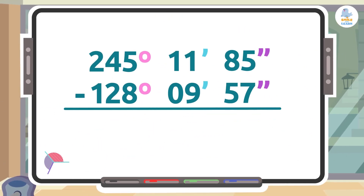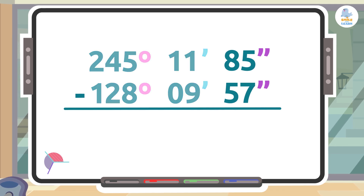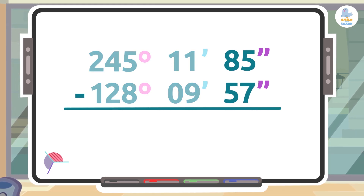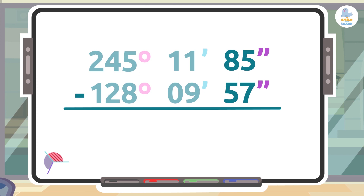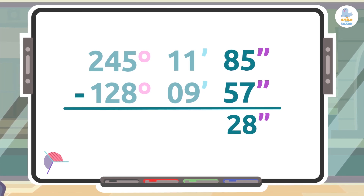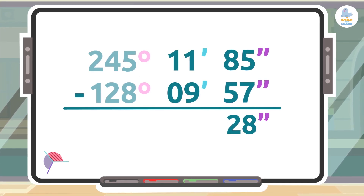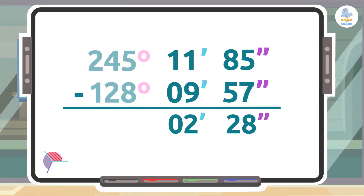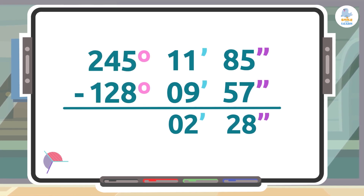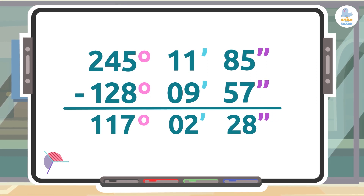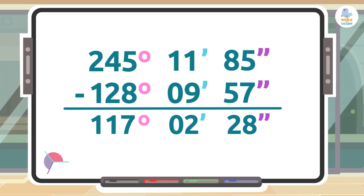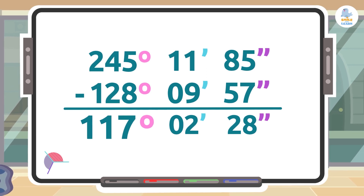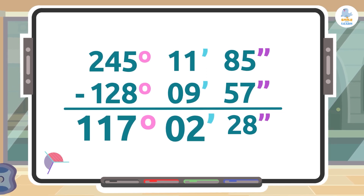Now we can subtract. Here we go: 85 seconds minus 57 seconds is 28 seconds. 11 minutes minus 9 minutes is 2 minutes. And 245 minus 128 is 117 degrees. So our final result is 117 degrees, 2 minutes, and 28 seconds. Good job!